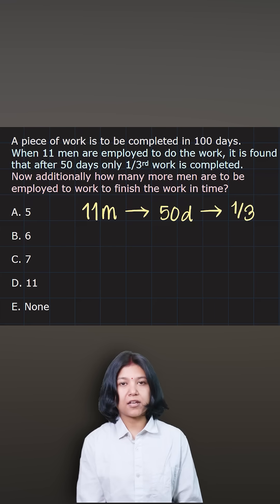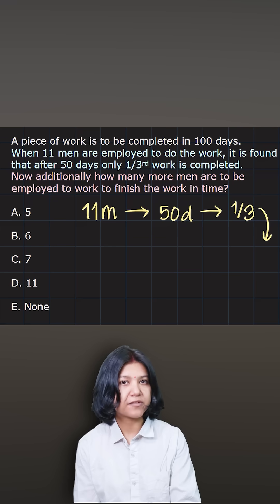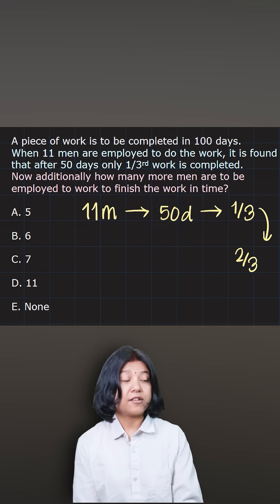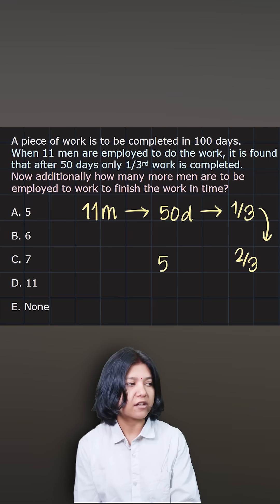Now think about the remaining number of days and the remaining work they have to do. If one third is done then the remaining is just found by finding the difference of the two values, one and three which is two. So two thirds of the work is remaining. The number of days, luckily we have the same. We have the remaining 50 days again.